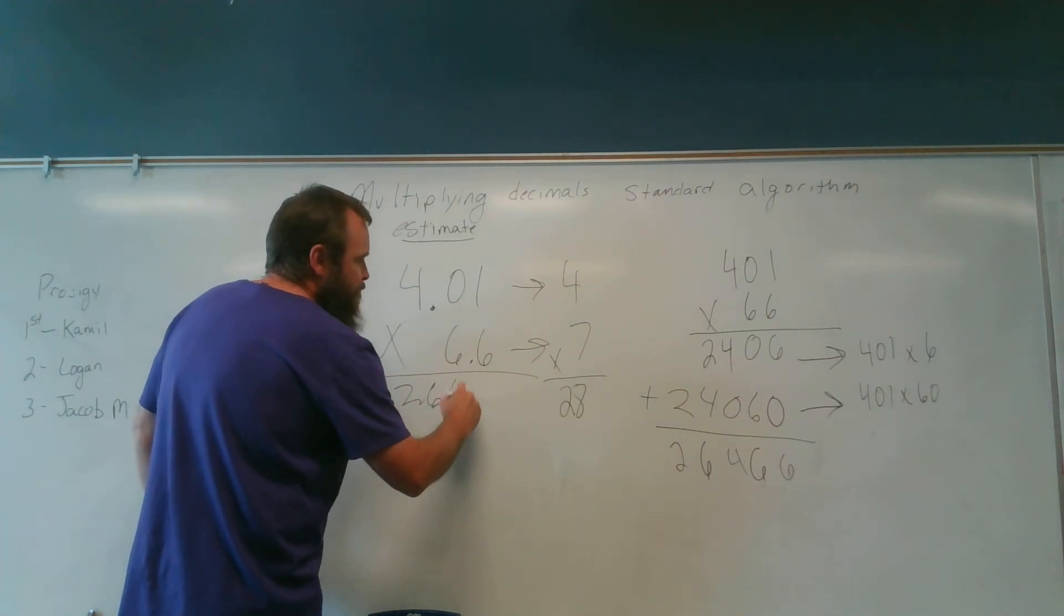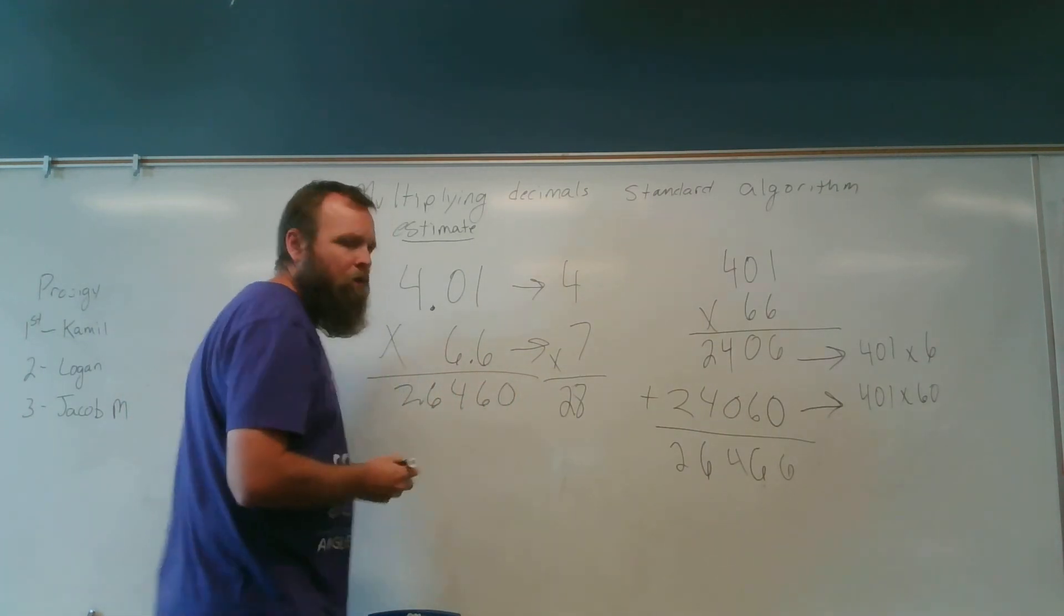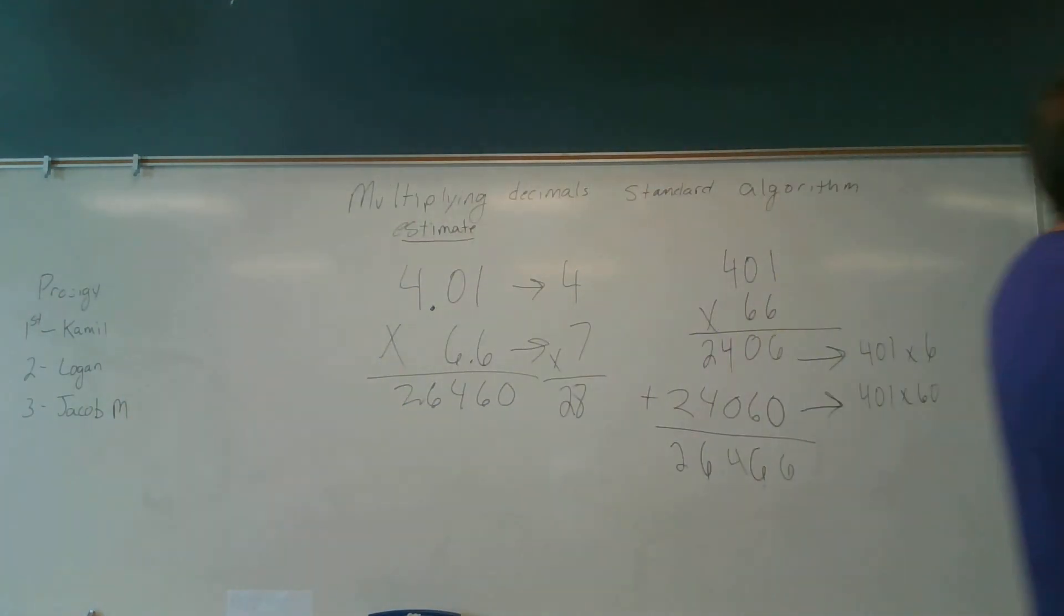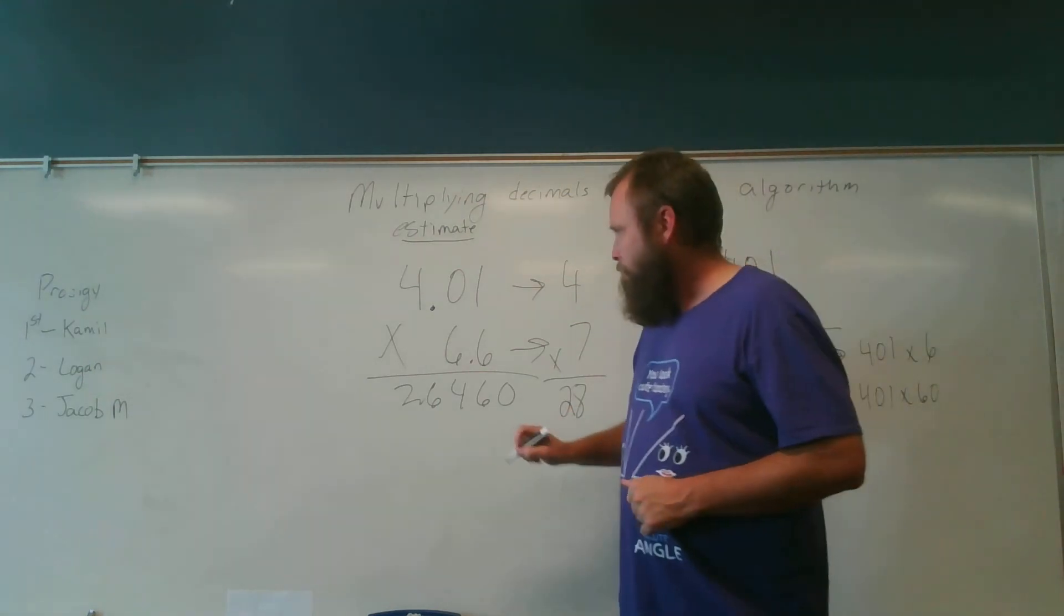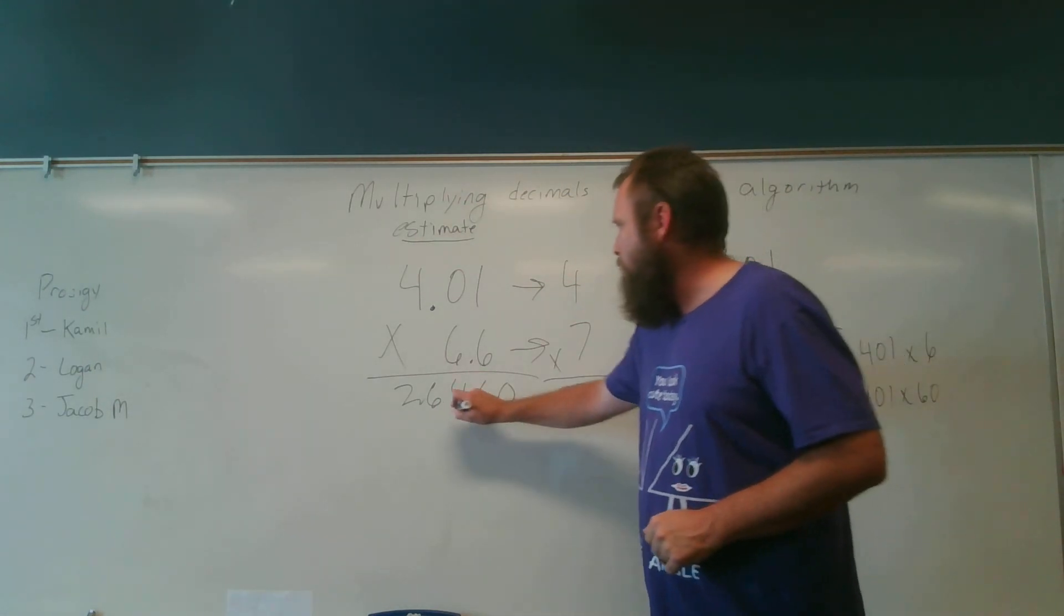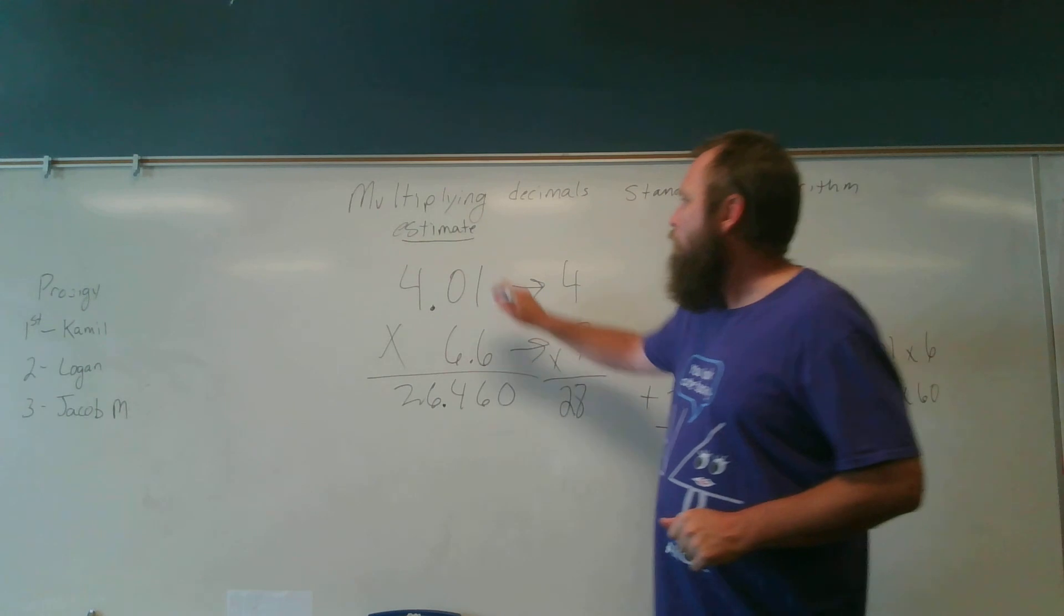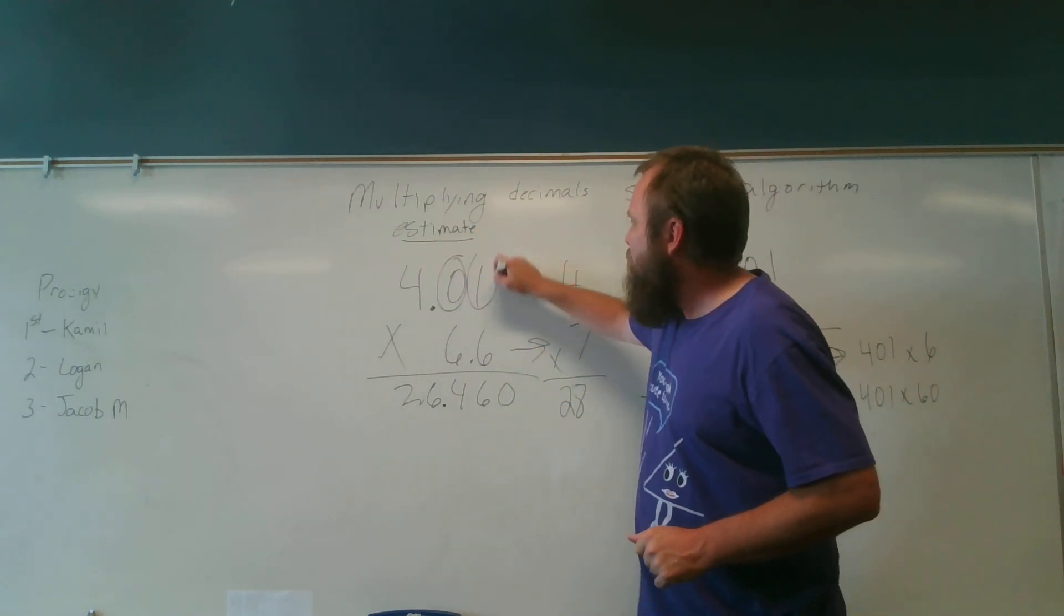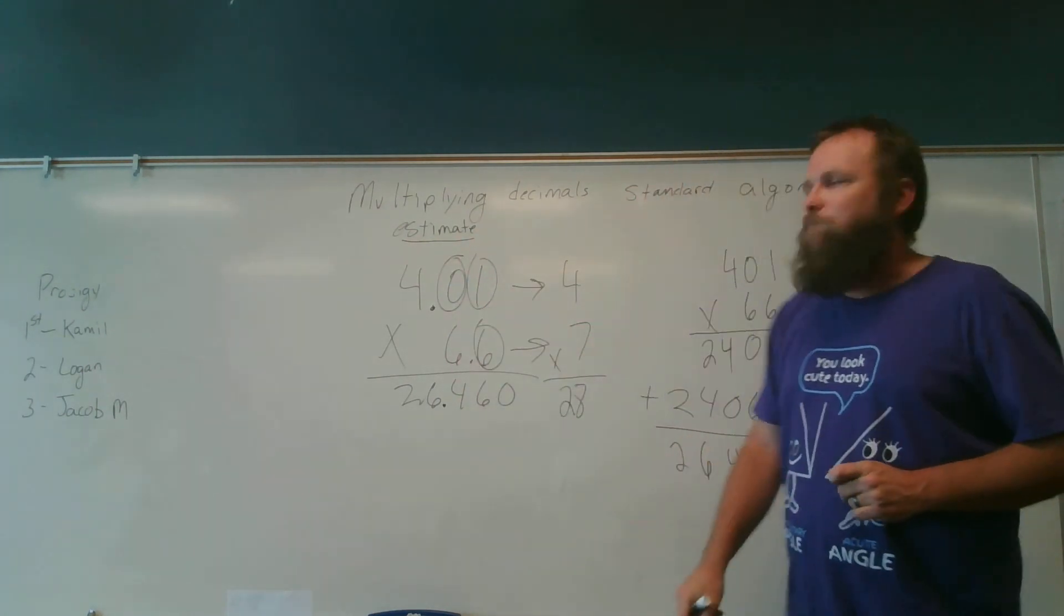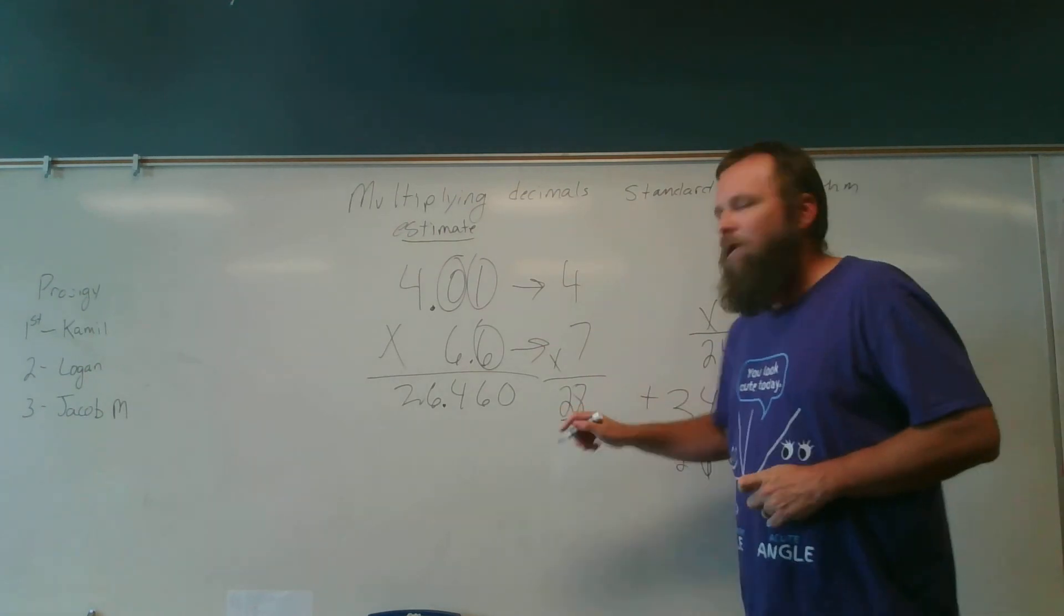Matthew, where am I placing my decimal point? Between the 6 and the 4. Good, between the 6 and the 4. Why? Because there's 1, 2, 3 numbers behind my decimal point, and it's close to 28. Yes, you may go potty.